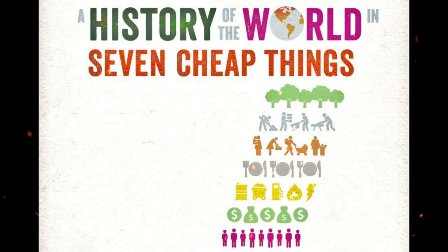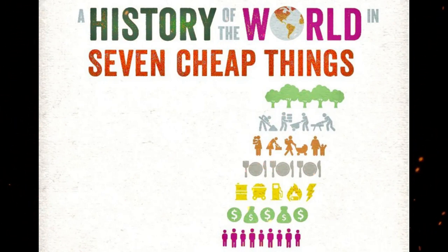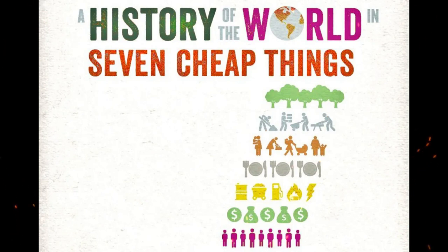The chapter on cheap money begins with the atrocious conditions in the silver mines of Spain's 16th-century colonies, where indigenous peoples were worked to death.